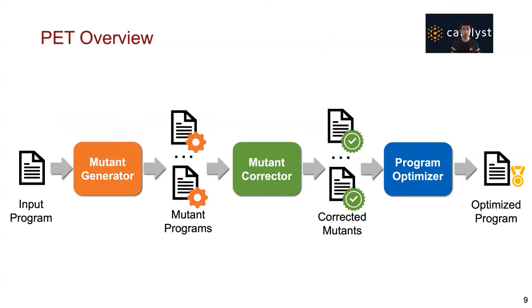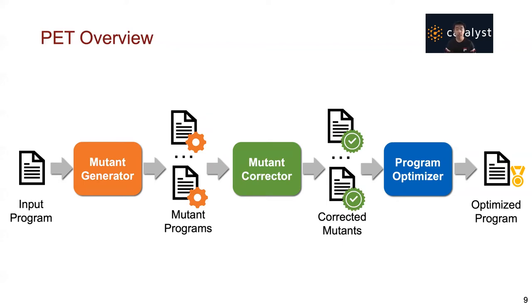This figure shows an overview of PAT. By accepting a tensor program as input, first, the mutation generator tries to generate possible mutants of the input program by considering both fully and partially equivalent transformations. The generated mutant programs are sent to the mutant corrector, which automatically corrects the incorrect outputs of these mutants and produces corrected mutants. Finally, the corrected mutants are used by the program optimizer to construct an optimized program.